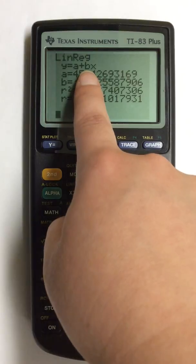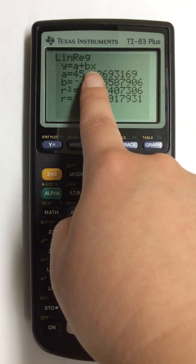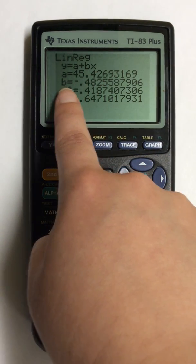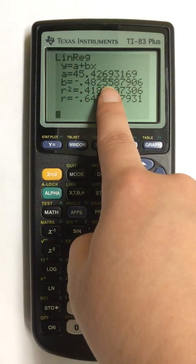Same thing for B. B is next to the X and that is your slope, which is right down below: negative .48255 and so on.